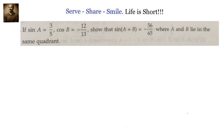If sin(A) equals 3/5 and cos(B) equals -12/13, show that sin(A+B) equals -56/65, where A and B lie in the same quadrant. We have been given sin(A) and cos(B), and we have to show that sin(A+B) is -56/65.